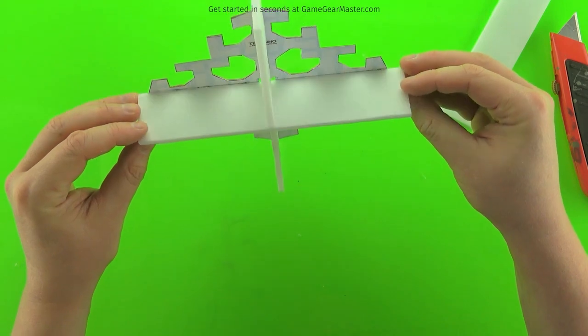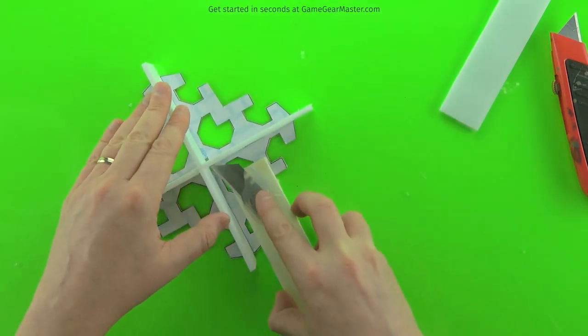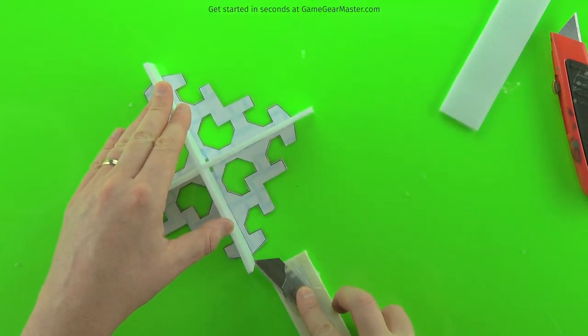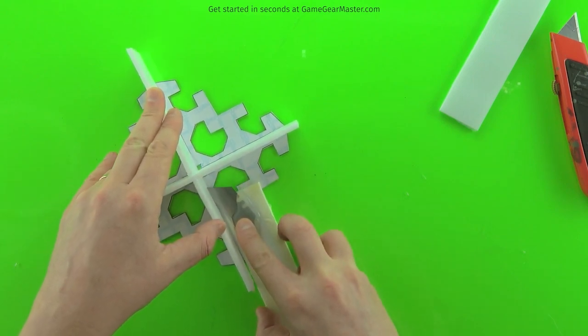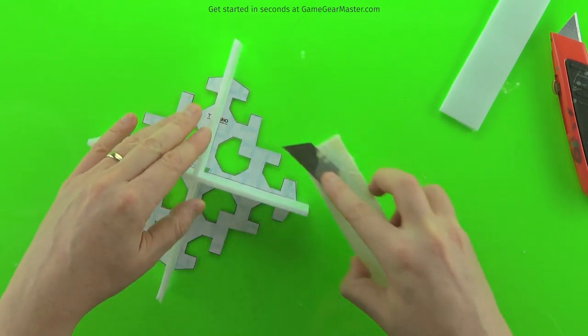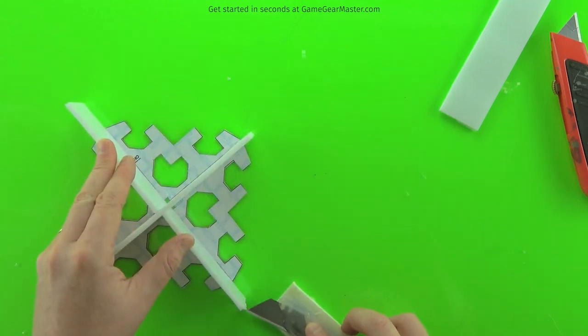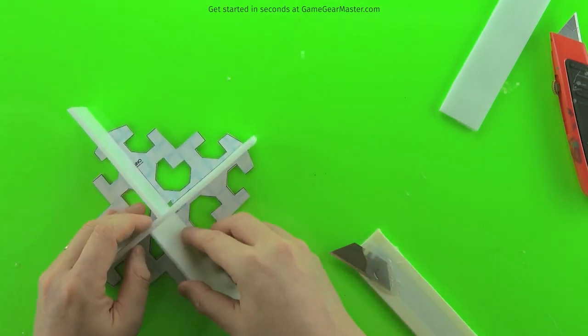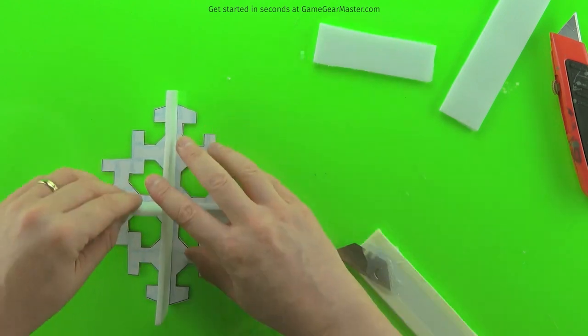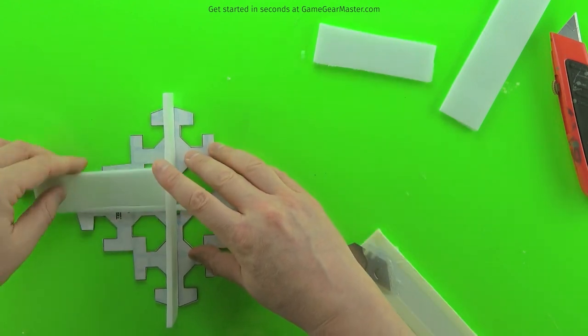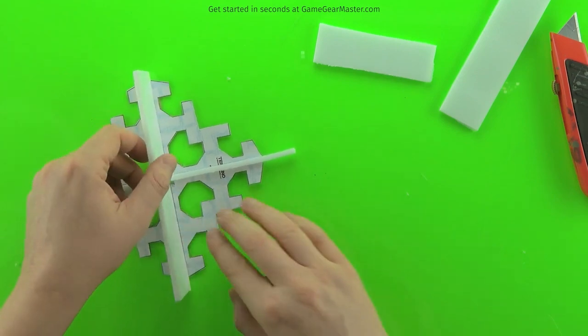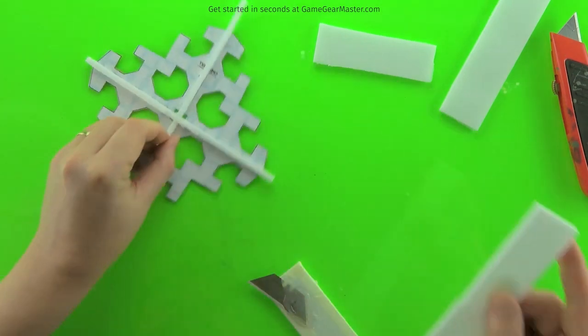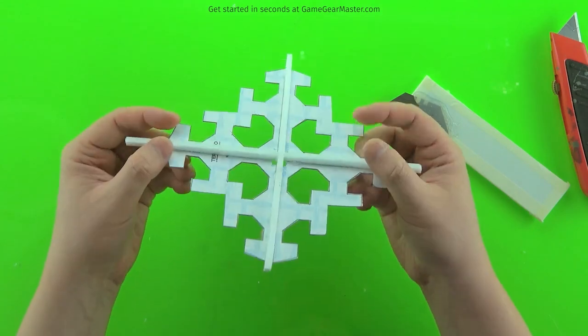And then we're going to use our single sheet depth cutter to cut off the excess, just like we did for the other one. There you go.